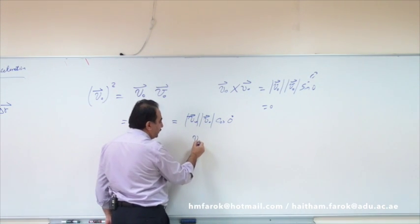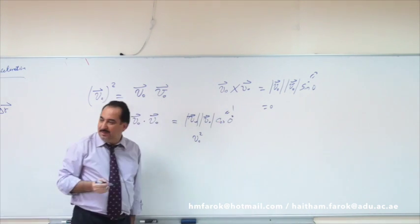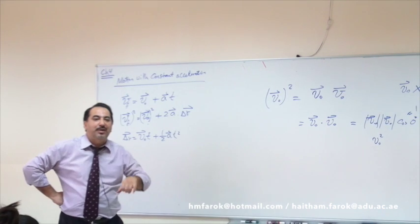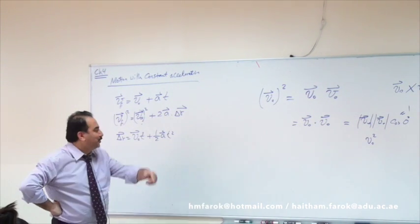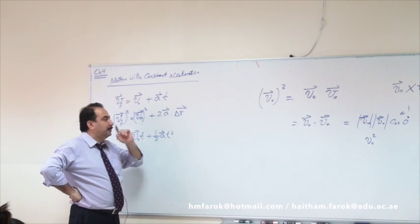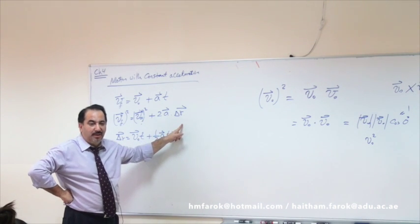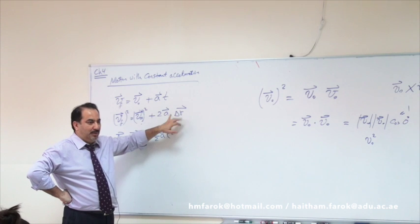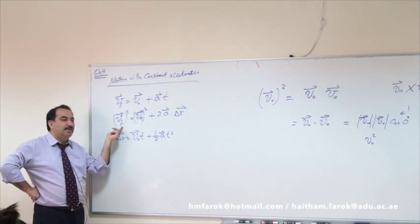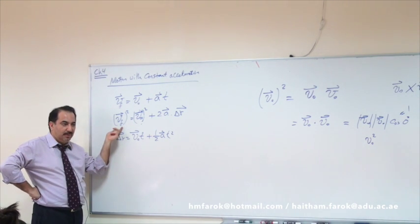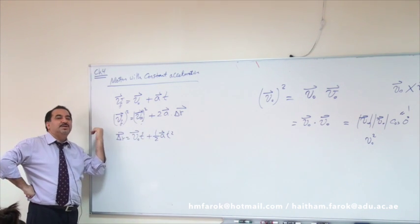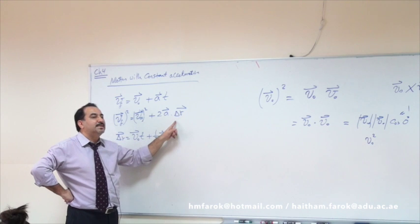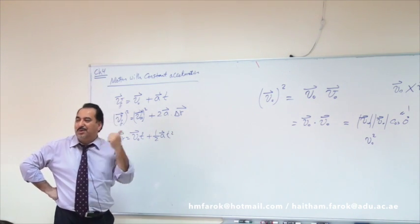Is it possible that something multiplied by itself equals zero — except if it's zero itself? So there's no cross product here. Let's try the dot product: V₀ dot V₀ equals magnitude times magnitude times cosine of zero, which is one. So V₀ dot V₀ equals magnitude squared — a scalar. Now, V₀ vector squared is a scalar because it's a dot product.